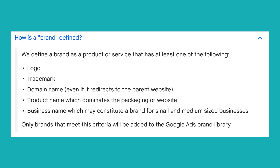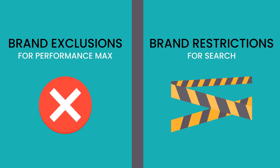Only brands that meet this criteria will be added to the Google Ads brand library, which we'll talk about later — that's how you can go in and select brands to restrict or exclude. The two announcements from Google with brands include brand exclusions, which is exclusive to the performance max campaign type, and brand restrictions, which is for search campaigns.